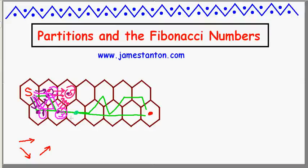You can see the pattern: to get to the next cell on the bottom row, there are three ways to reach it from the left and five ways from above, giving three plus five equals eight. Each answer is the sum of the two neighbouring cells. So in the next cell there must be five plus eight equals 13 ways, then 8 plus 13 is 21, 34, 55, 89, 144, and so on. This generates the Fibonacci numbers.